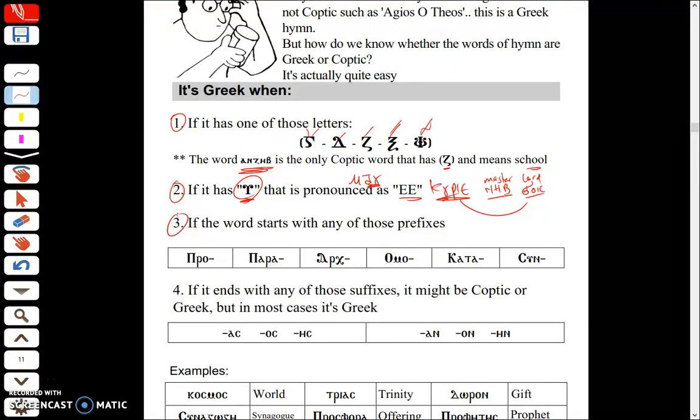The third one: if you have any of those prefixes, this is the most common one and will make your life much easier. Those are Greek words: Pro-, Para-, Arch-, Omo-, Kata-, and Sin-. Those prefixes when you see them you know it's a Greek word for sure.